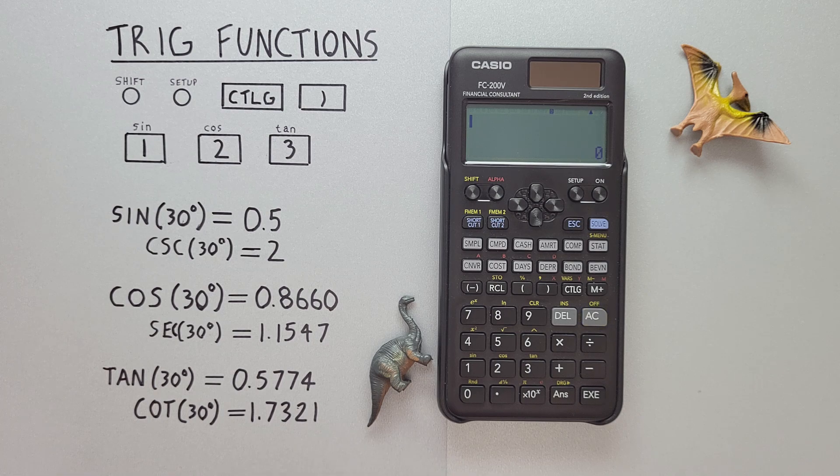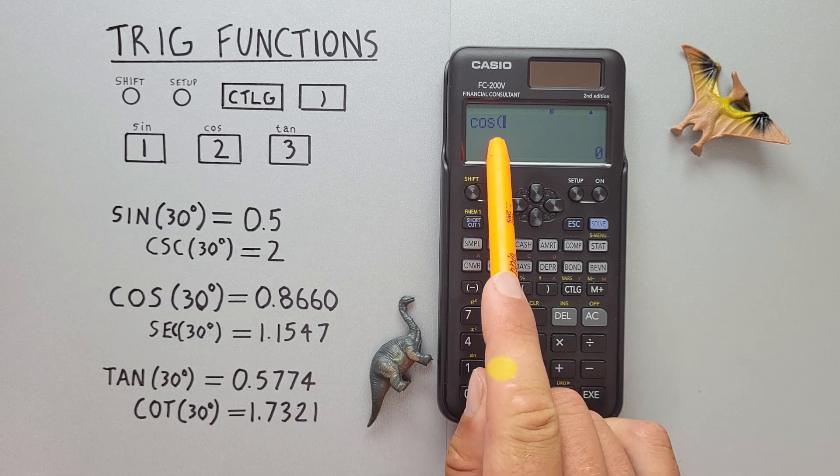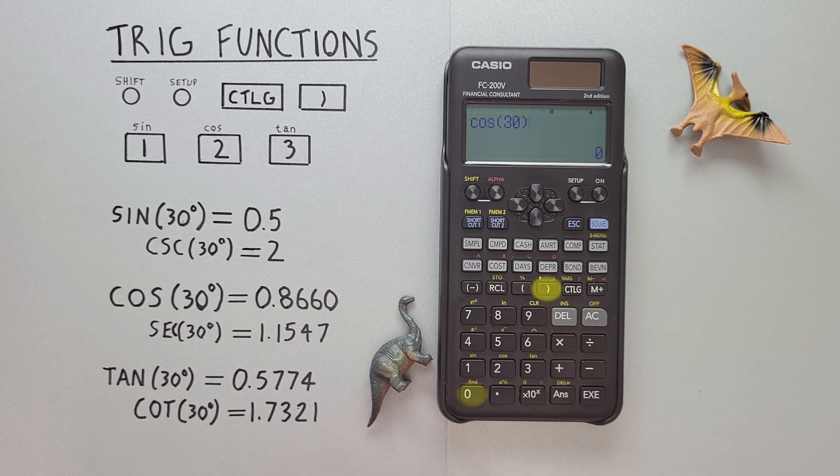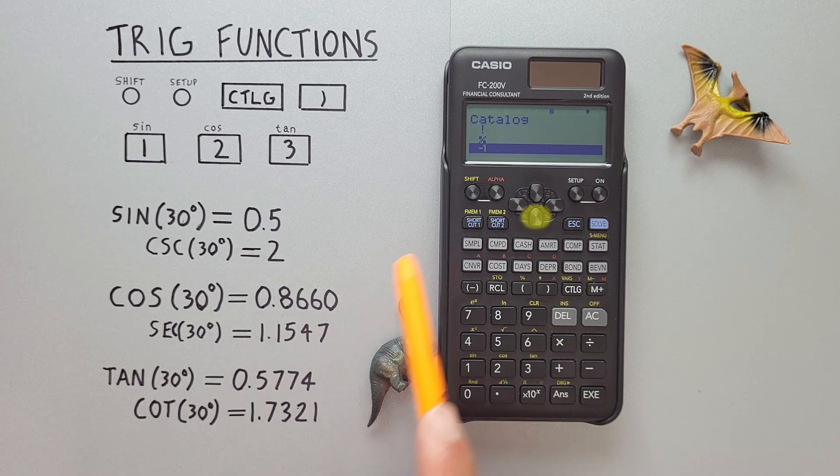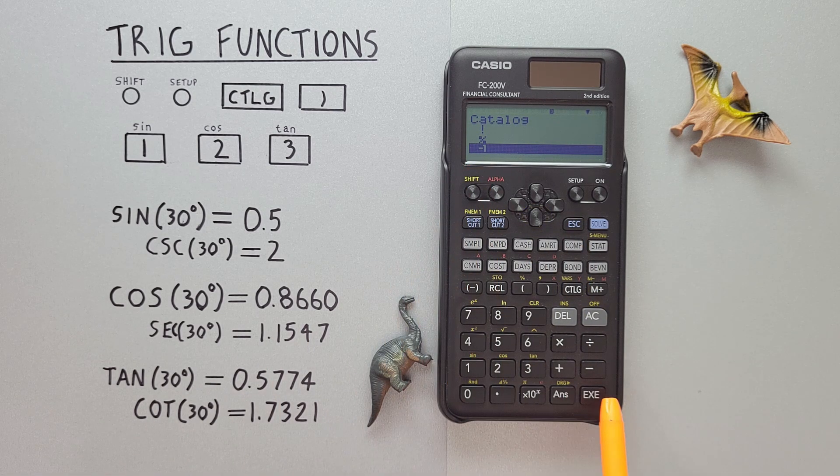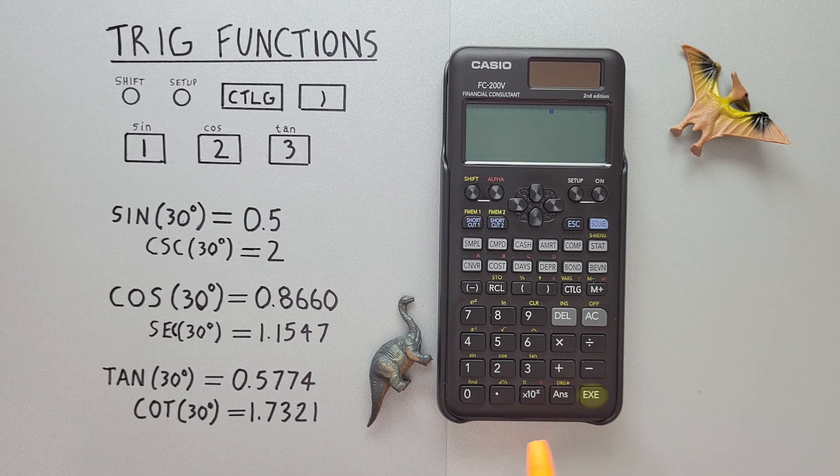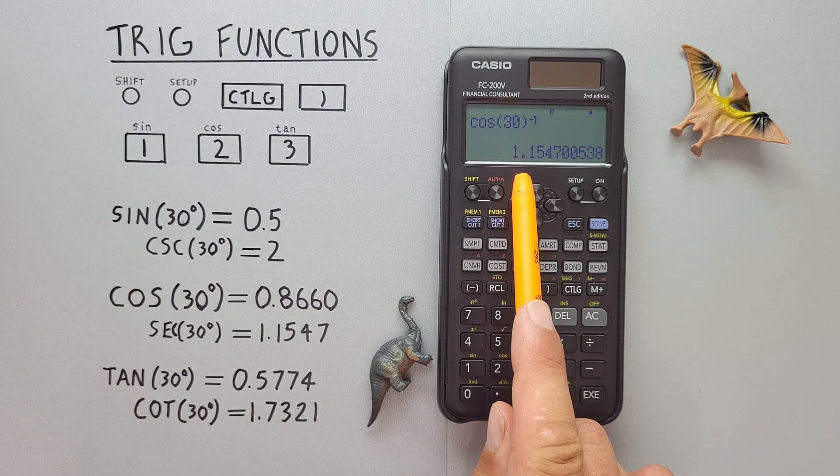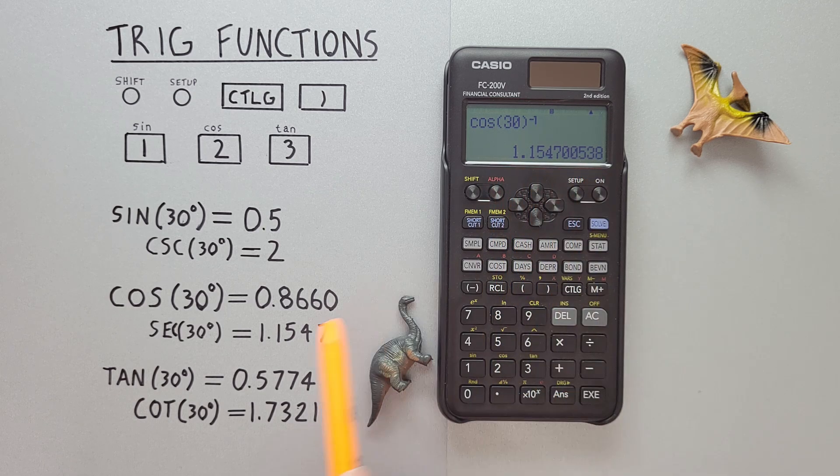For secant, we use cos. So again, we go shift two to get cos. 30, close our bracket. And then go to the catalog, select negative one, and hit exe. And we get the secant of 30 degrees is equal to 1.1547, etc, which is correct.